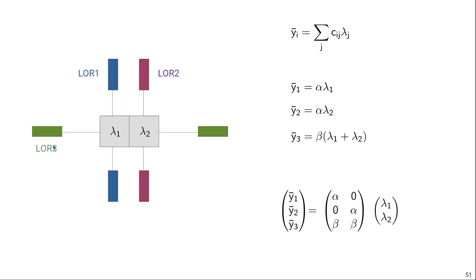Since we know the acquisition physics very well, we can perfectly describe the system in terms of equations. If we know the activity concentration in voxel 1 and 2, we can perfectly describe the expected measurements on the three LORs. In this example, LOR 1 is only sensitive to voxel 1, so the expected measured value on LOR 1 is alpha times lambda_1. LOR 2 is only sensitive to activity in voxel 2. And LOR 3 gets contributions from both voxels, lambda_1 and lambda_2, with a sensitivity factor beta.